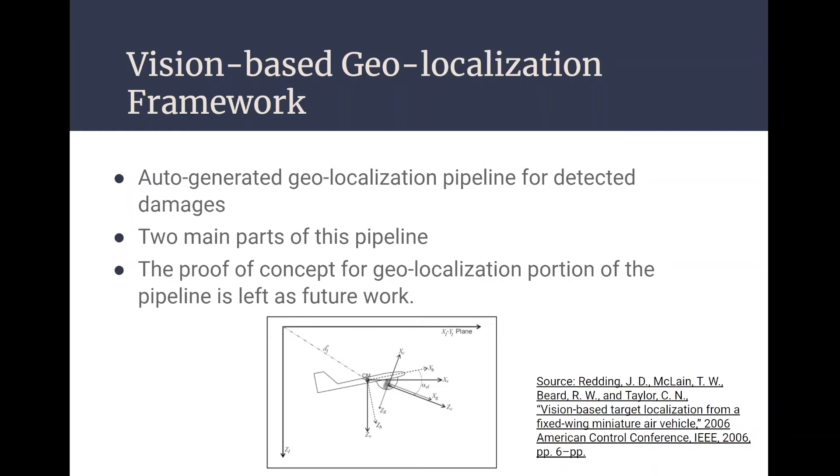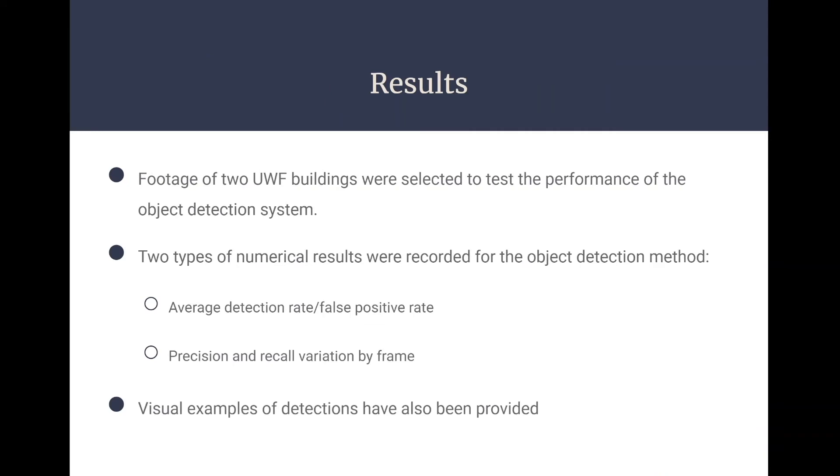For the results, in this study we mainly focused on the detection accuracy aspect of the proposed pipeline. In UAV footage data, we identified two different videos including footage of two different buildings on UWF campus with high volumes of damage instances, which were Argo Hall and Martin Hall. Both roofs have a similar type of damage. We performed our model prediction and saved individual image frames for analysis. Two types of numerical results were recorded for the object detection method: the average detection rate and the precision and recall variation by frame. We have also provided visual examples of detections.